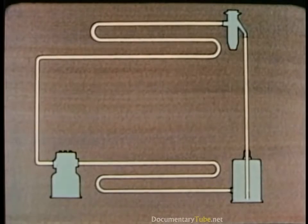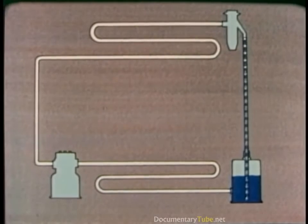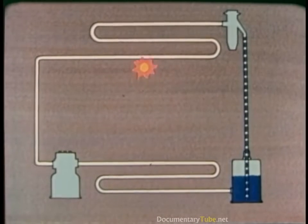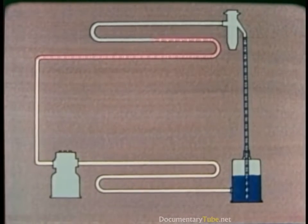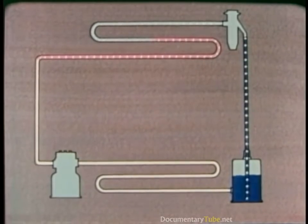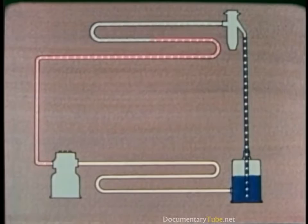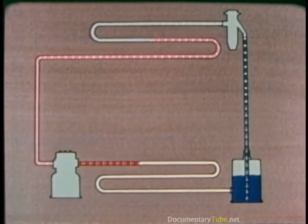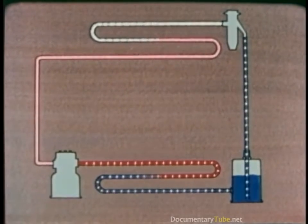Now let's review the whole thing. Refrigerant, under high pressure, flows from the receiver to the expansion valve. The valve causes a pressure drop. The evaporator takes in heat from the box — if anything in the box is hotter than the refrigerant, it gives up its heat to the refrigerant. As the refrigerant takes in heat, it changes from a liquid to a gas. The compressor sucks the vapor out of the evaporator and compresses it, increasing the pressure and temperature. The vapor is now hotter than the surrounding air, so in the condenser, heat is given off to the air. As the refrigerant loses its heat, it changes from a gas to a liquid and flows into the receiver.